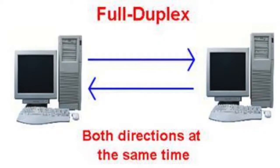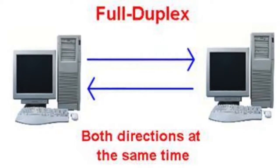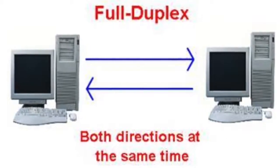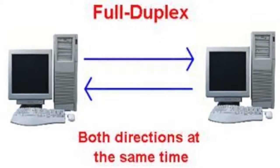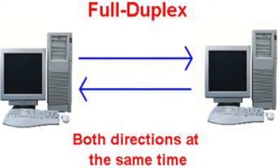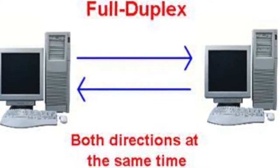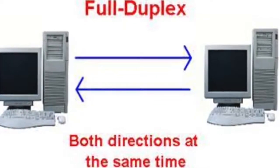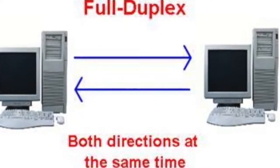Finally, the full-duplex. It is also a two-way communication and it is a simultaneous one. The best example for a full-duplex is the mobile phone.